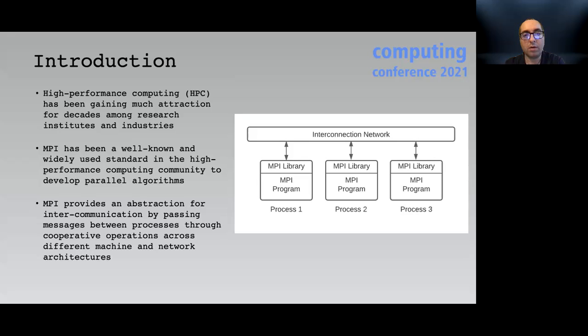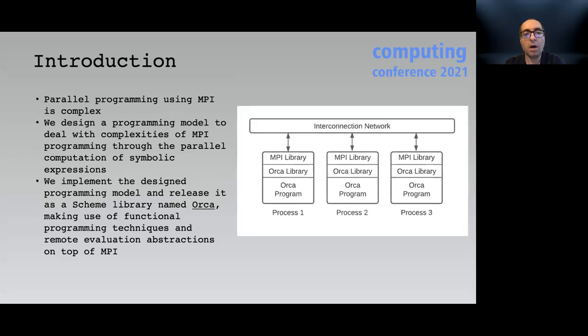MPI provides an abstraction for intercommunication by passing messages between processes through cooperative operations. However, parallel programming using MPI is not without complications requiring programmers to deal with many complexities. In this work, we present a programming model for the parallel computation of symbolic expressions and implement it as a software library Orca. The library allows programmers to evaluate the given symbolic expressions in parallel among multiple processes using different data partitioning methods.